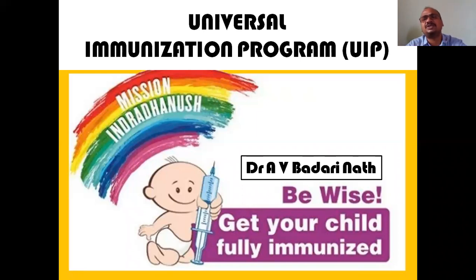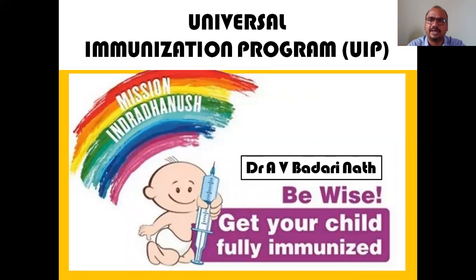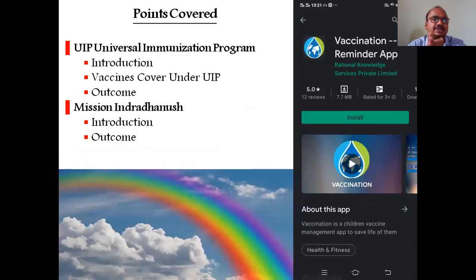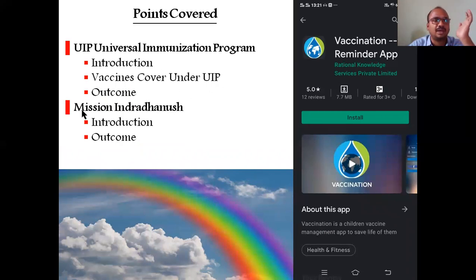Mission Indradhanush is especially for children. UIP - Universal Immunization Program - is for all ages. Whereas Mission Indradhanush is specifically for children, covering seven diseases, equal to the seven colors of a rainbow. It was launched in 2014. We will cover UIP and Mission Indradhanush - introduction, vaccines covered, and outcomes - as per your syllabus.